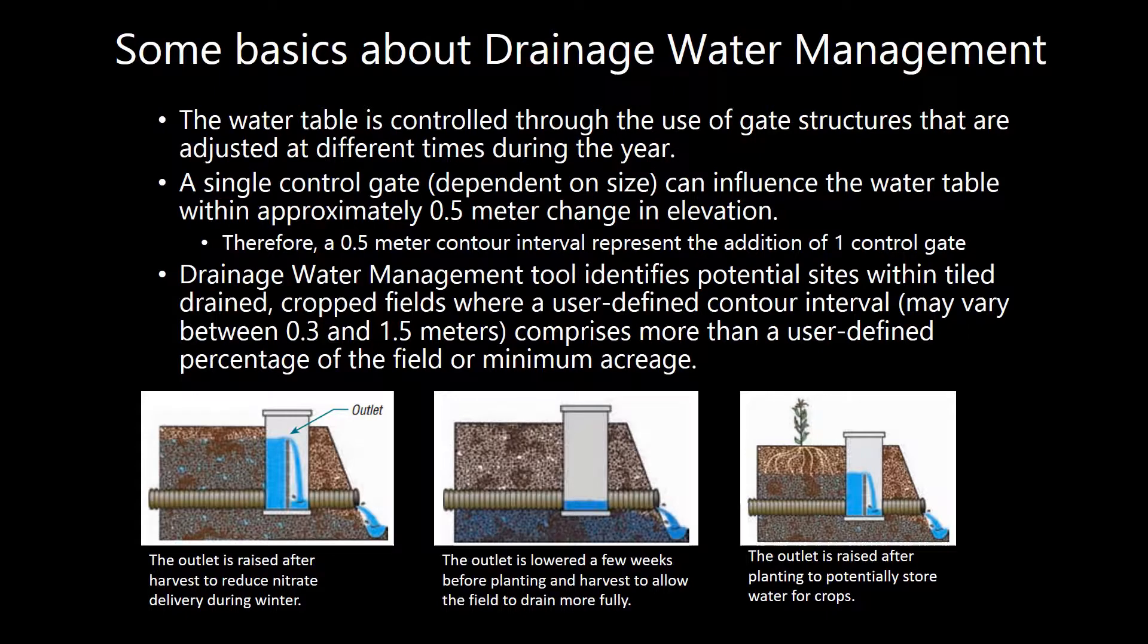One control gate can influence the water table within approximately a half a meter change in elevation.